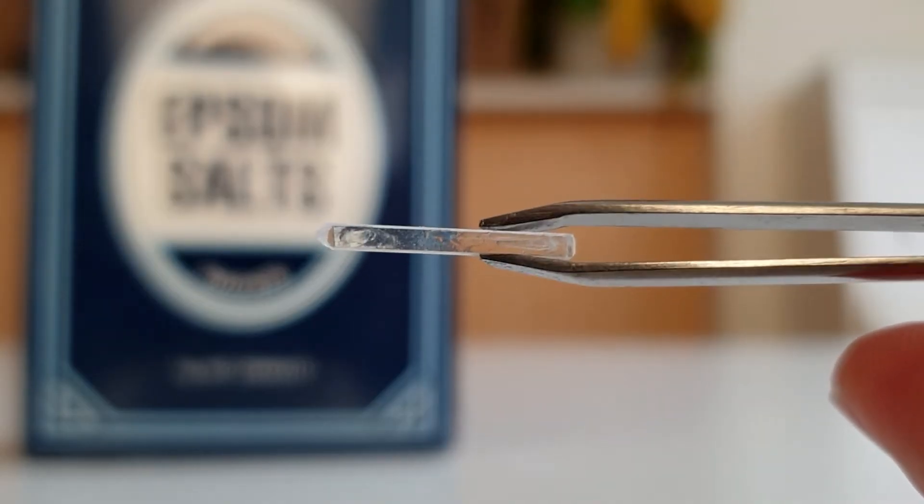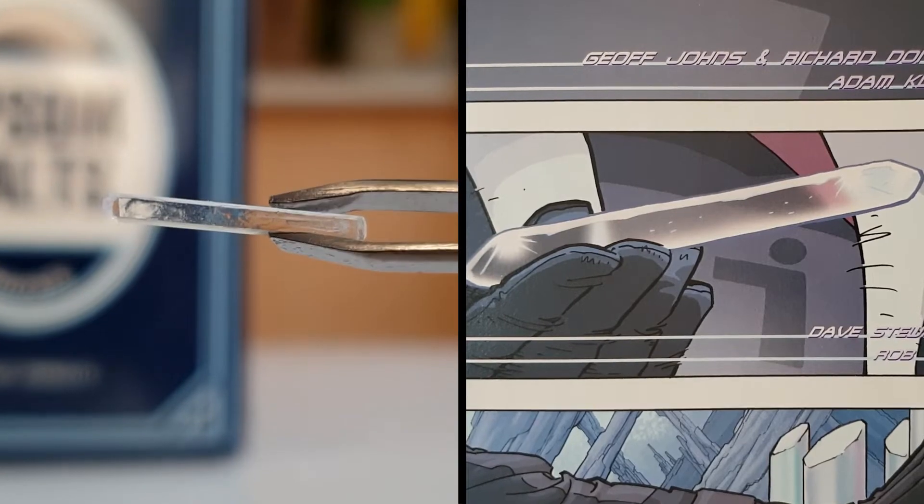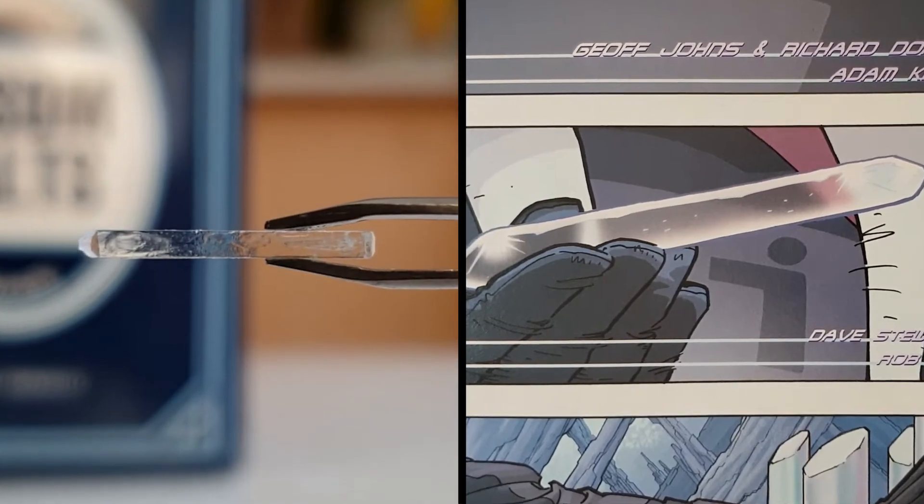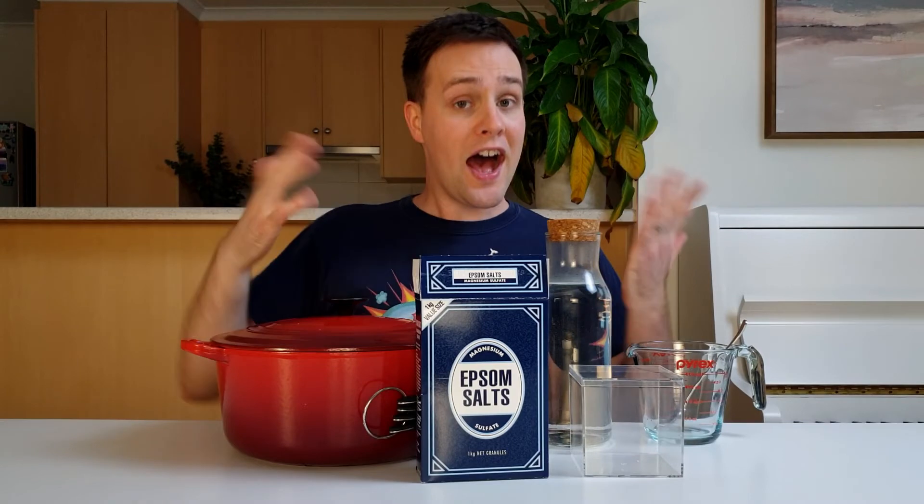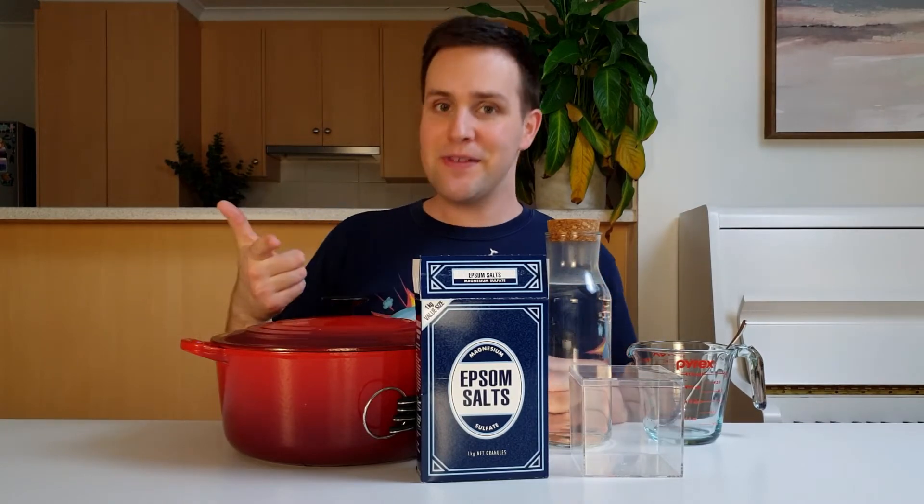It forms long, colourless crystals that look a lot like the crystals in the Fortress of Solitude. So now we have a substance for our crystals, ask an adult to help you with the following steps.